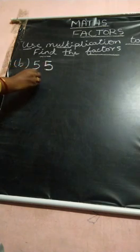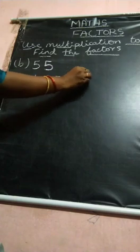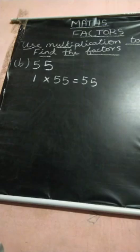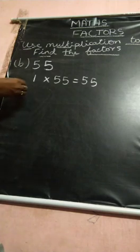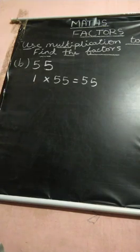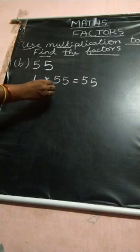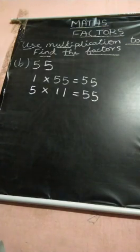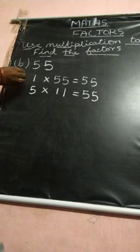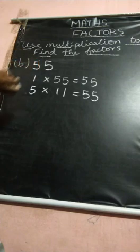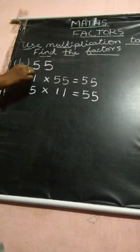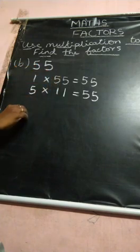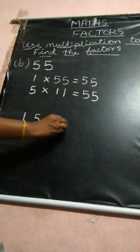Next number: 55. You start from 1. 1, 55s are 55. 2 table — will 55 come? No. 3 tables also — 55 will not come. 4 table — not come. Move on to 5. 5, 11s are 55. Only these two multiply to give 55. So the factors are: 1, 5, 11, 55.